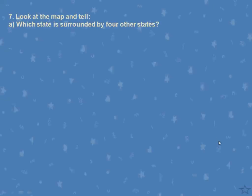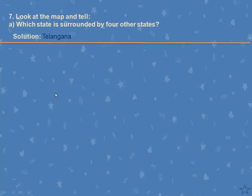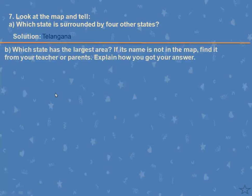Now look at the map: which state is surrounded by 4 other states? For example, if you take a state and count how many states surround it — 1, 2, 3, 4, 5 — they are asking which state is surrounded by exactly 4 states. For example, taking Telangana: one side is Andhra Pradesh, another is Karnataka, another is Maharashtra, and another is Chhattisgarh — that is 4 states. So the answer can be written as Telangana.